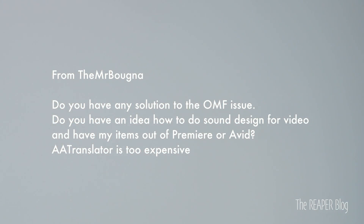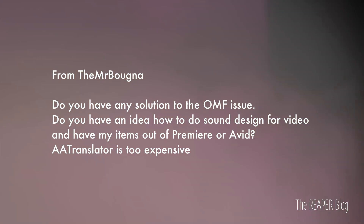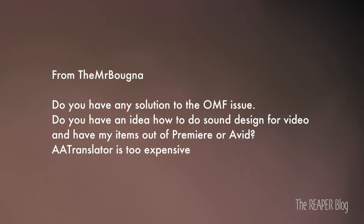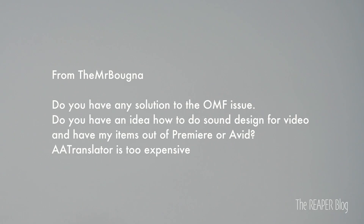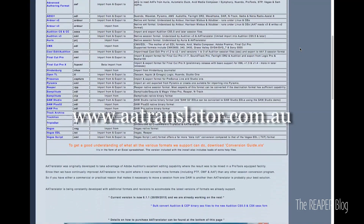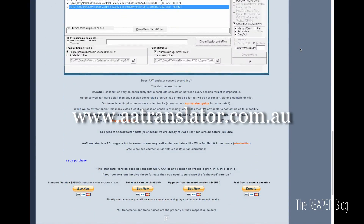First question comes from Mr. Boona: Do you have any solution for the OMF issue? Do you have any idea how to do sound design for video and get your files from Premiere or Avid? AA Translator is too expensive. Well, if you do a lot of this kind of work, AA Translator will be worth the money. It's $200, and it gets you not only OMF importing, but converting directly from a Pro Tools session to Reaper and all these other formats.